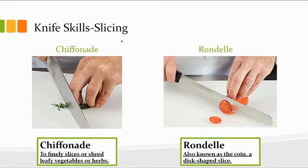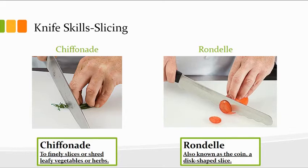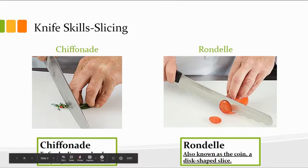Here are a couple of the different types of cuts that we would initially do in class. This first one right here is called the chiffonade. What it does is you finely slice or shred leafy vegetables or herbs when they're fresh — when they're dried out they end up crumbling, so you would do it freshly. You would stack the leaves together, roll them, then do a very smooth slicing motion, and that shreds them into small bite-sized pieces that still have a lot of flavor.